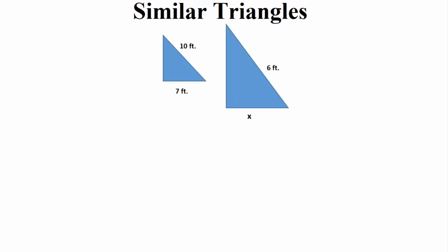This video is going to cover similar triangles. The main thing we need to remember about similar triangles is that they are pretty much solving proportions. Let's review solving proportions quickly. Proportions are essentially what they look like — two fractions that are set equal to each other, things that are proportional to each other.